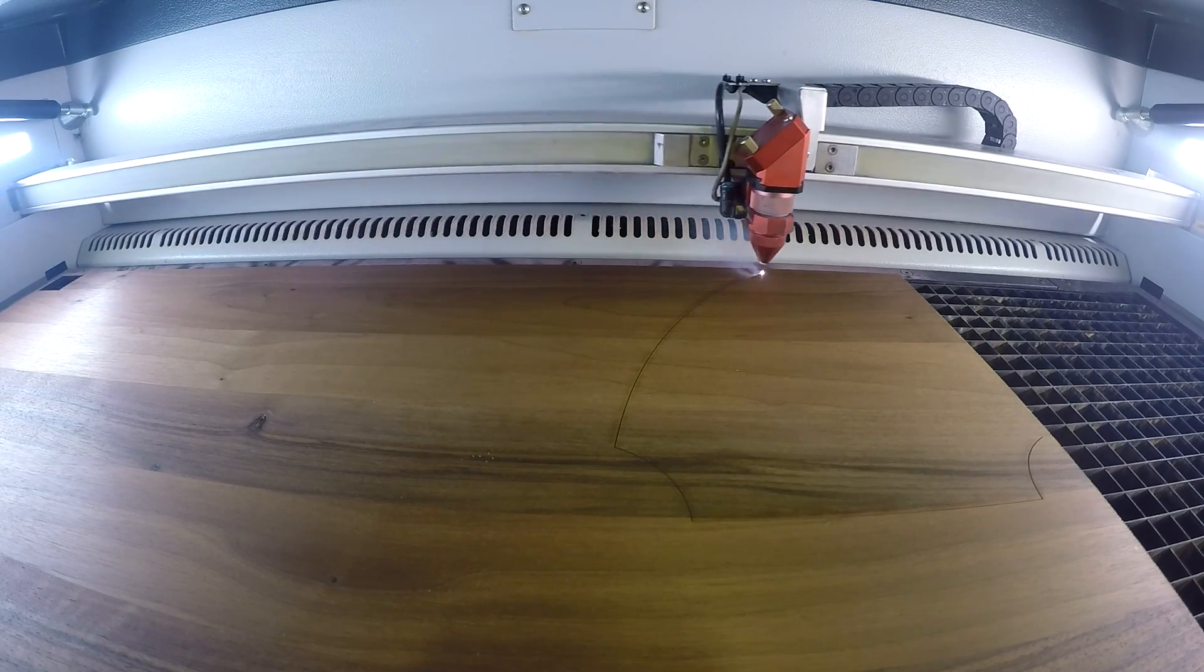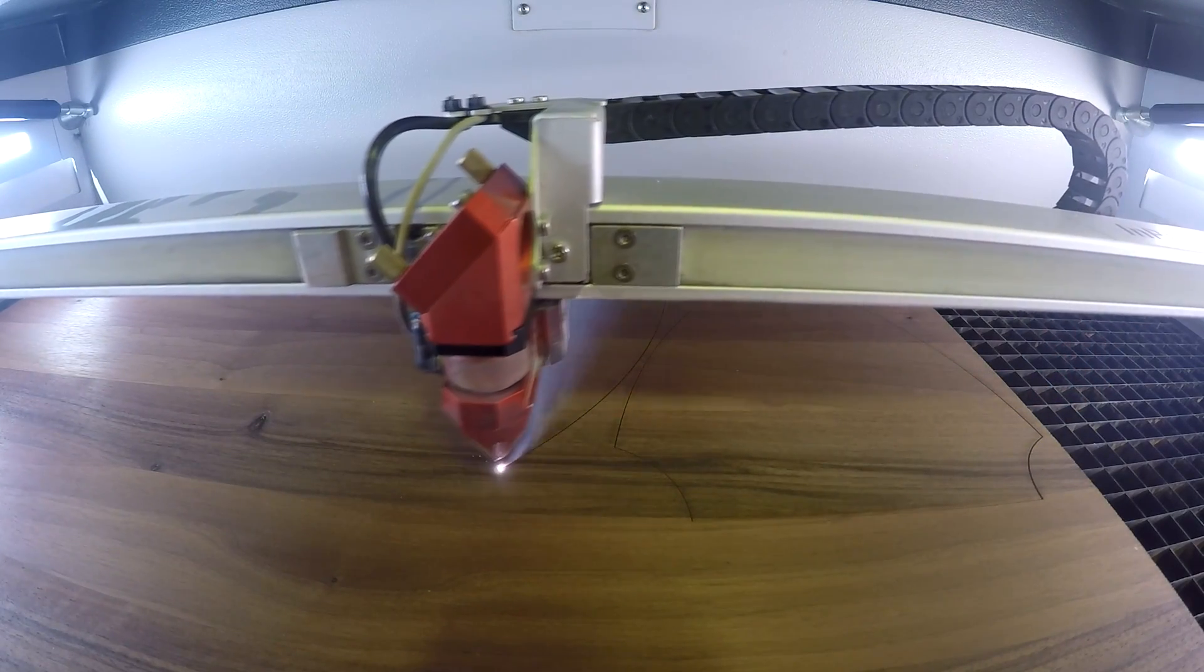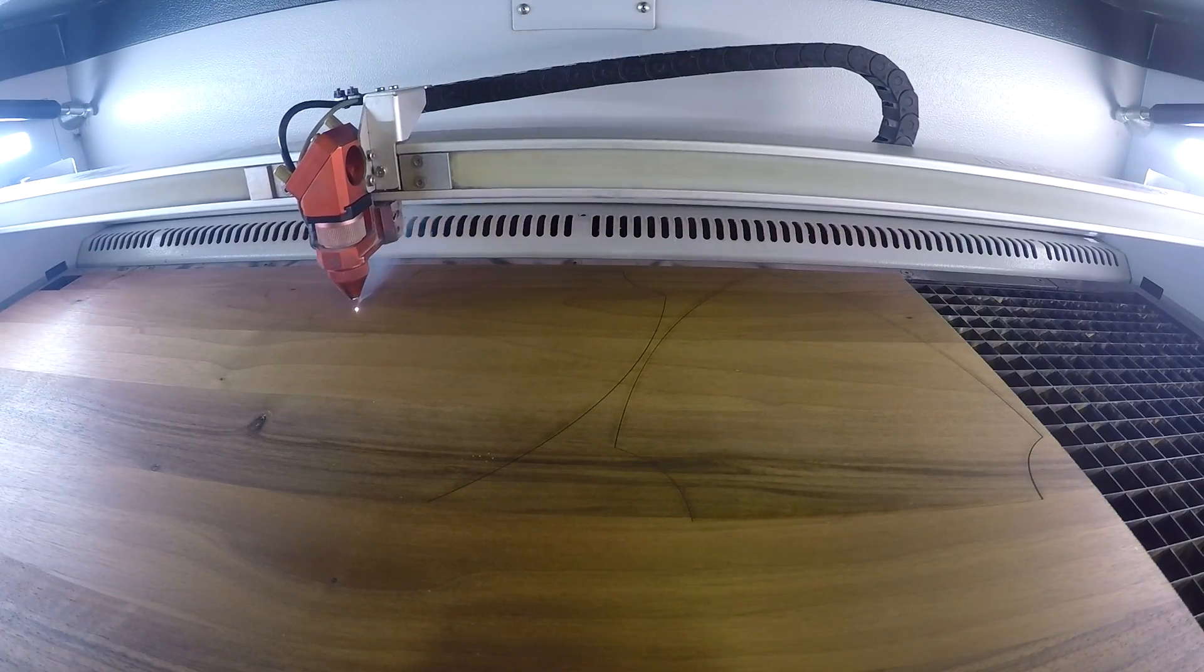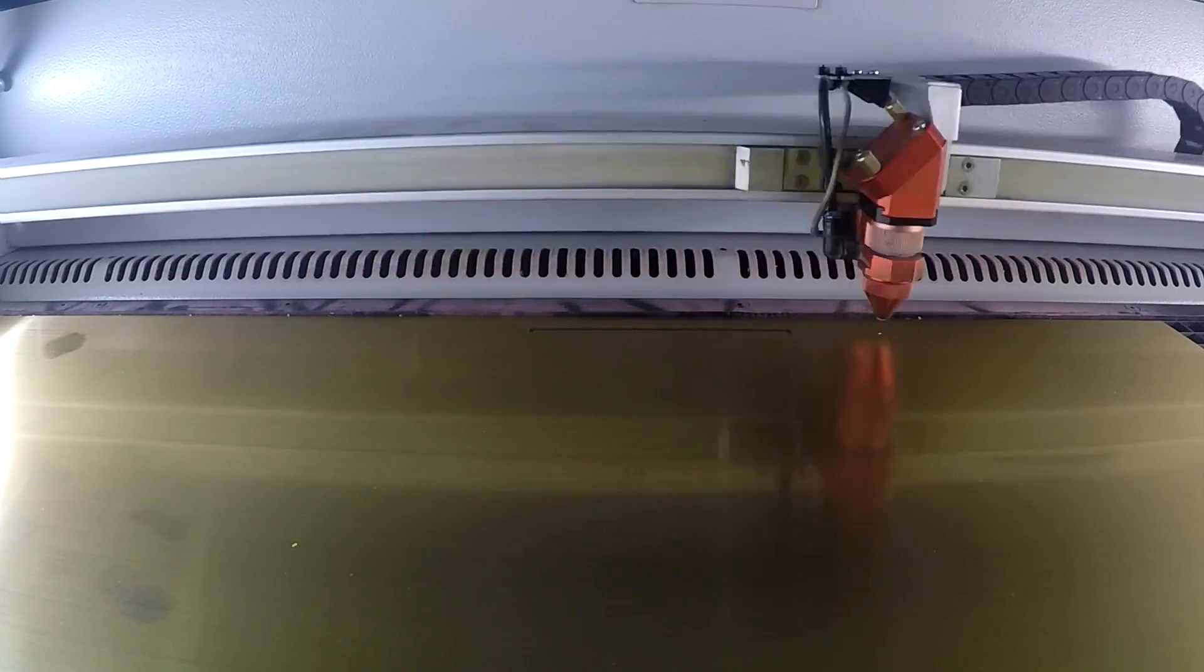For my plaque, I used the same Trotec solid wood walnut and the Trotec Lace Thins brush gold materials. Again, I engraved my design and cut out the shapes. I then took off the 3M adhesive and glued all the pieces together.